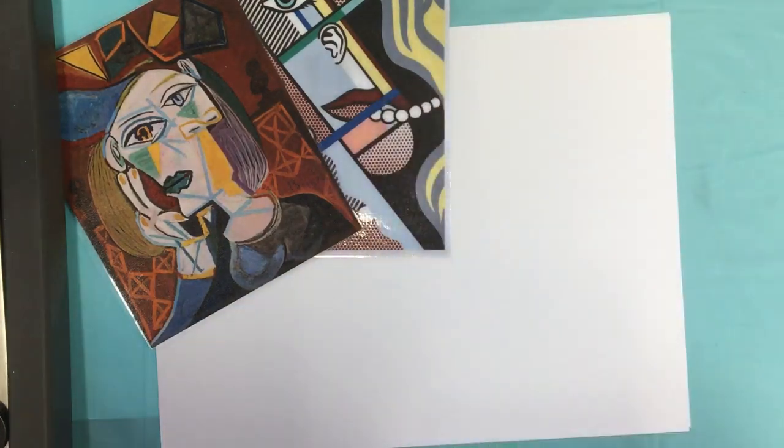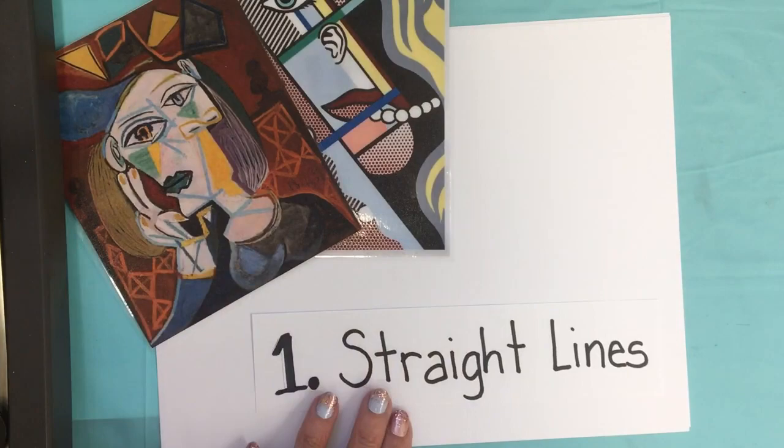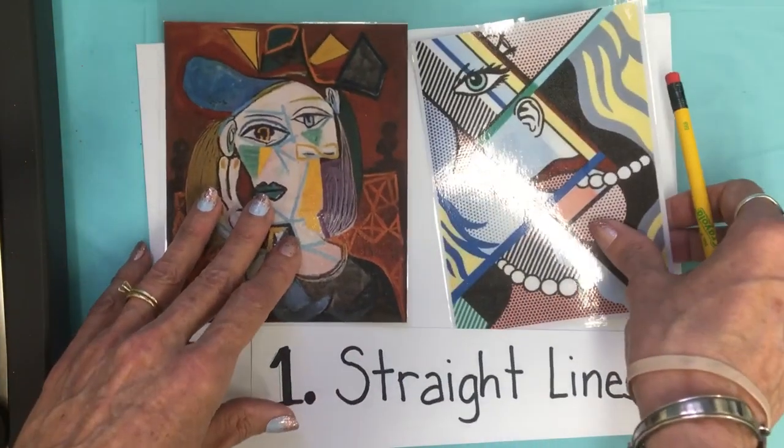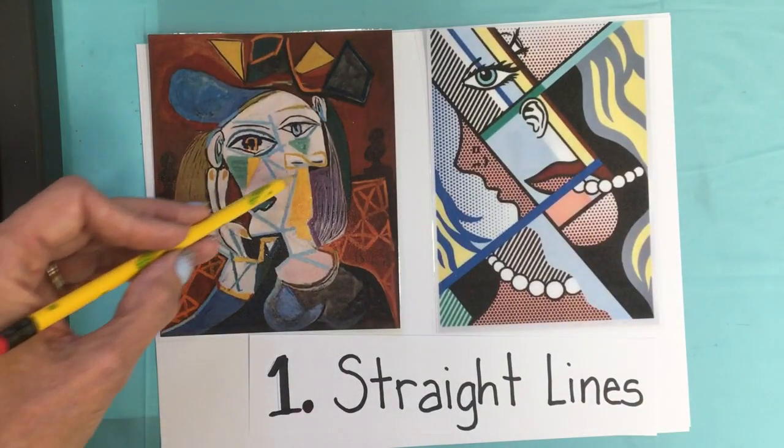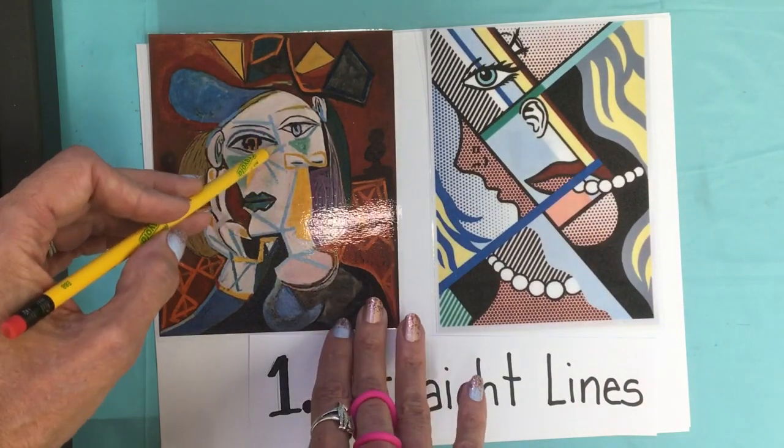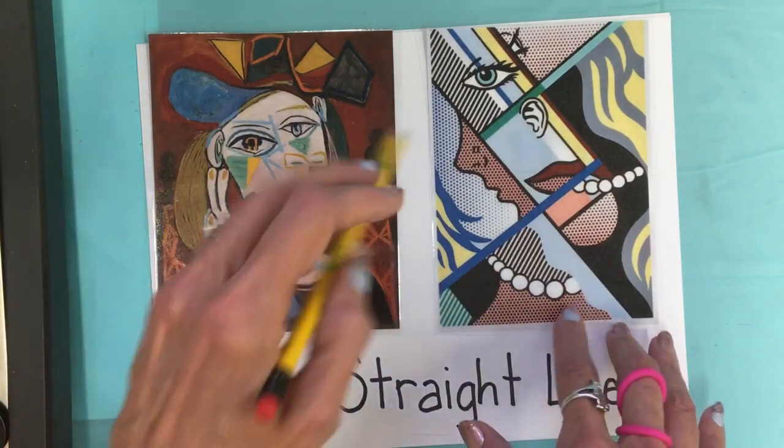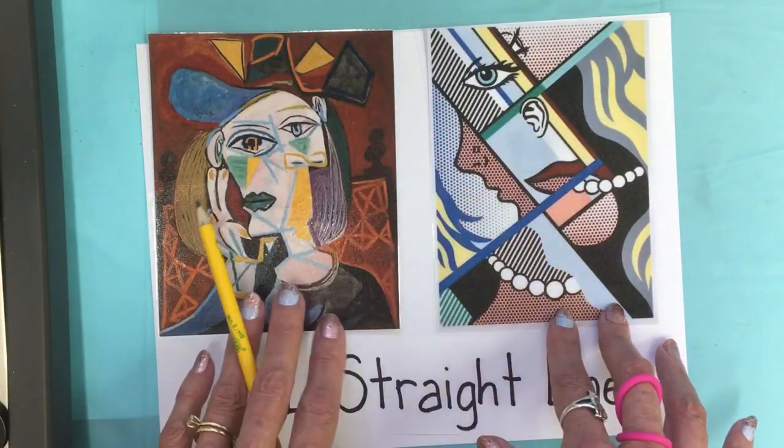The first way that we are going to be fragmenting our paper this week is by using straight lines. So if I look at these two examples of artworks I can see how the artist used many straight lines before they started drawing their artwork.